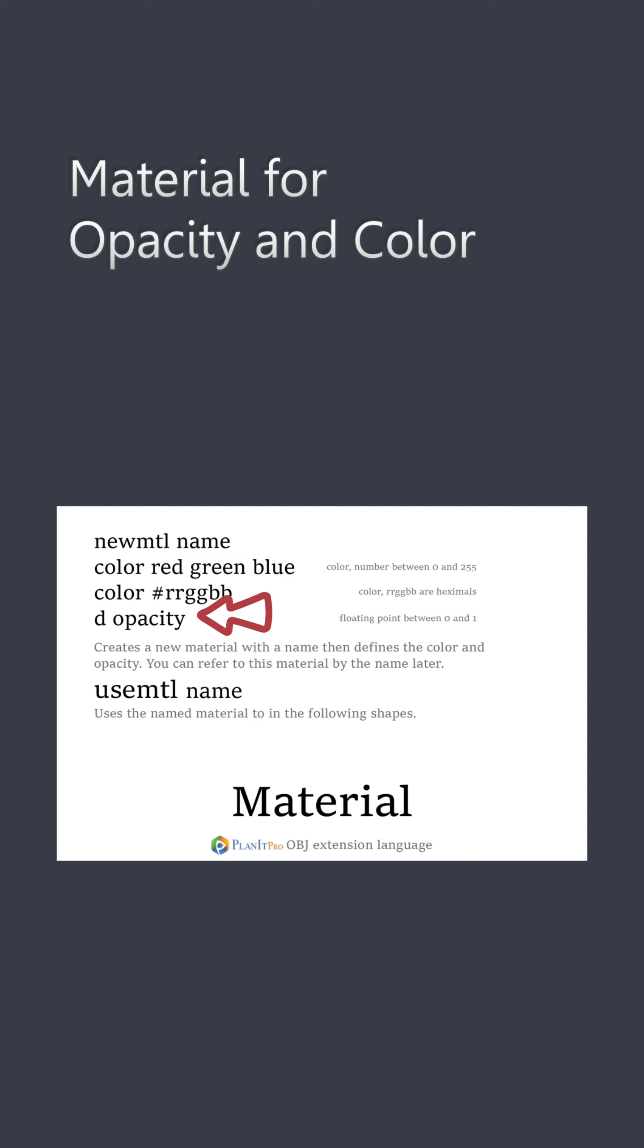The opacity is a simple floating number between 0 and 1, where 0 means completely transparent, and 1 means completely opaque. Later, you can use the material by referring to the name using the use MTL command. Usually we define all the materials used at the beginning and use them when we need them later on.